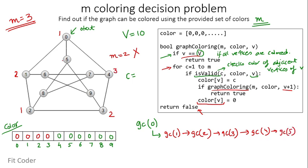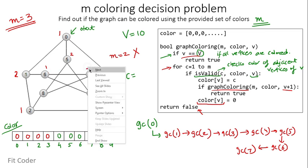We call GC(5). The neighbor has color 1, so we assign color 2 to vertex 5. We invoke GC(6). At vertex 6, color 1 is not assigned to any adjacent vertex, so we assign color 1 to vertex 6. We invoke GC(7). At vertex 7, color 1 is assigned to an adjacent vertex but color 2 is not, so we assign color 2 to vertex 7.